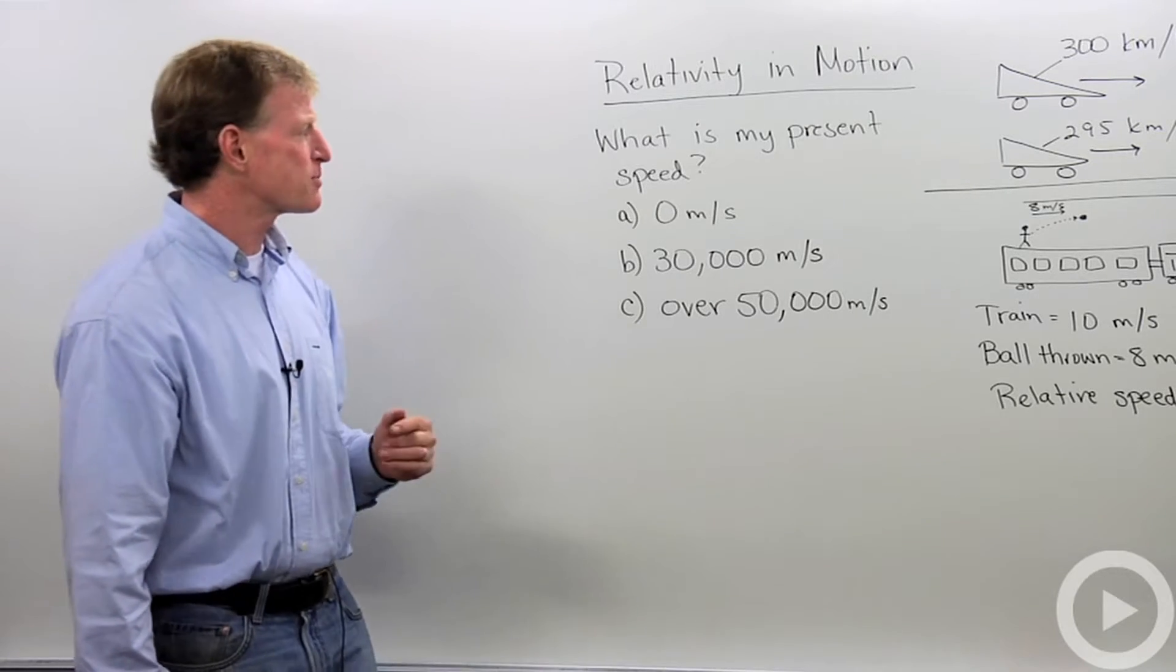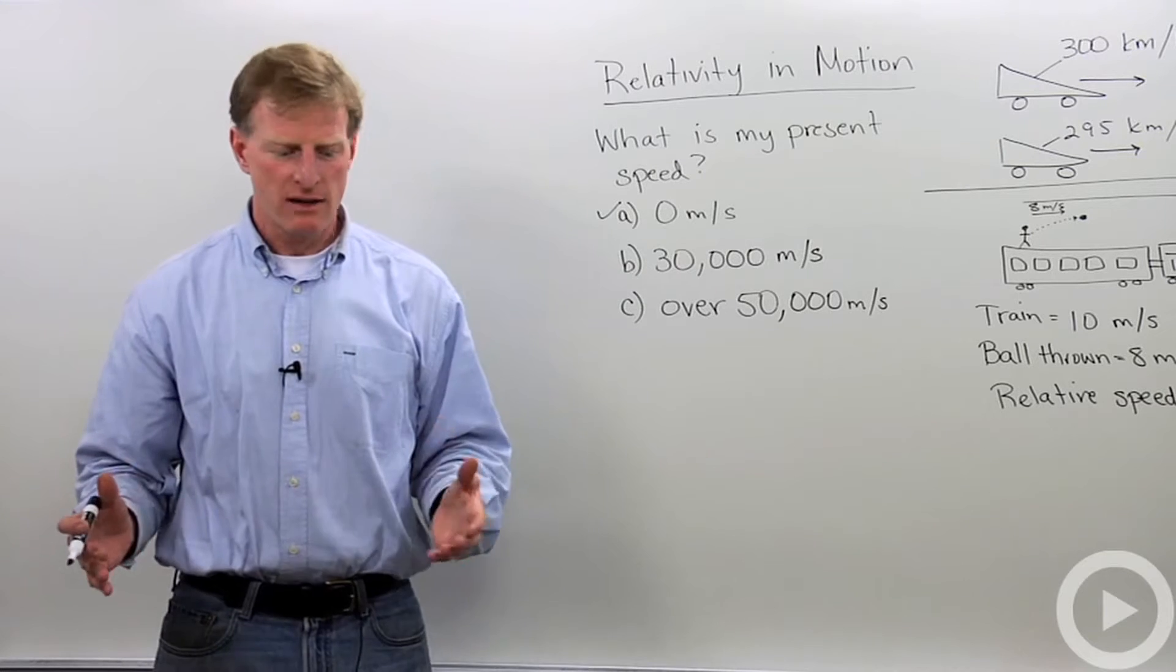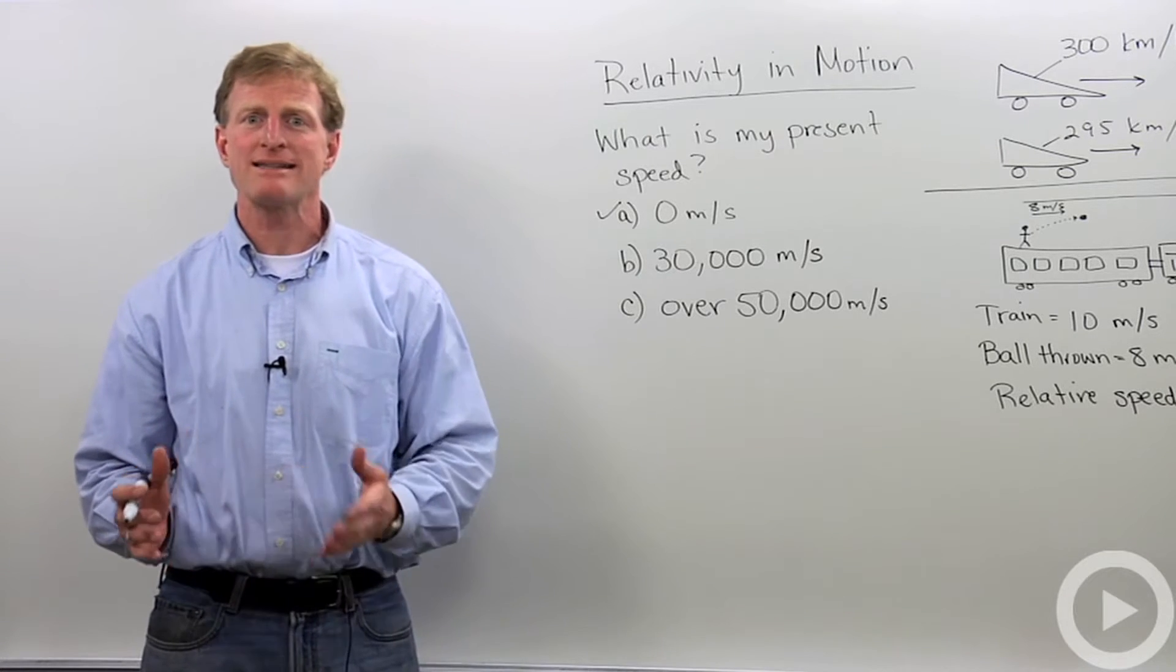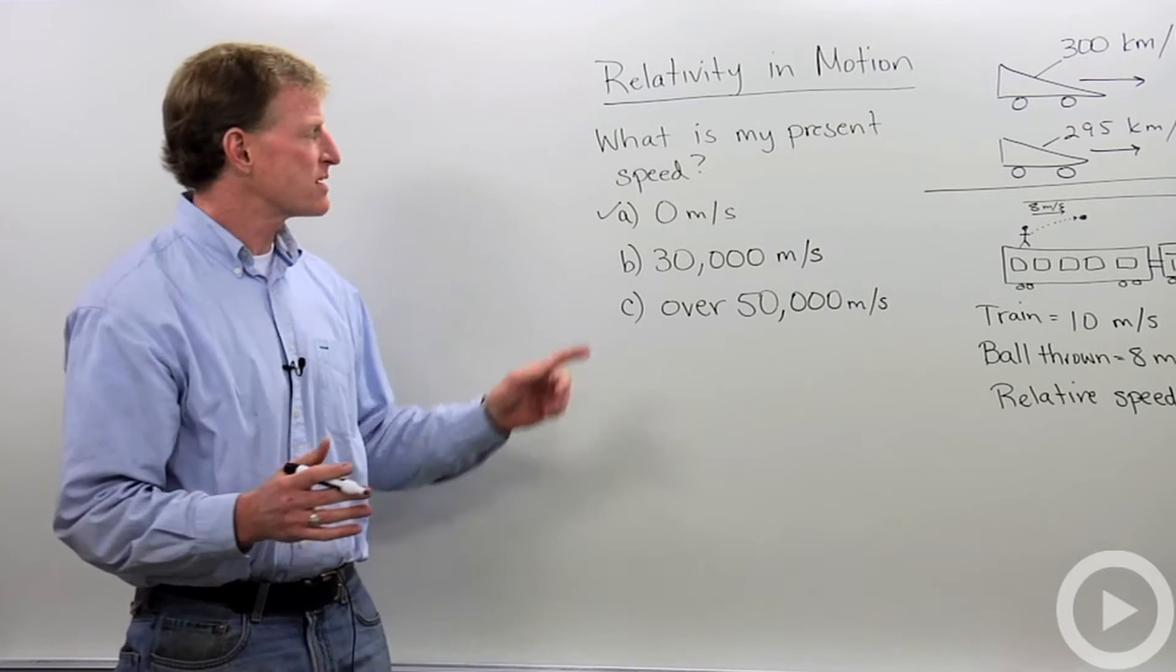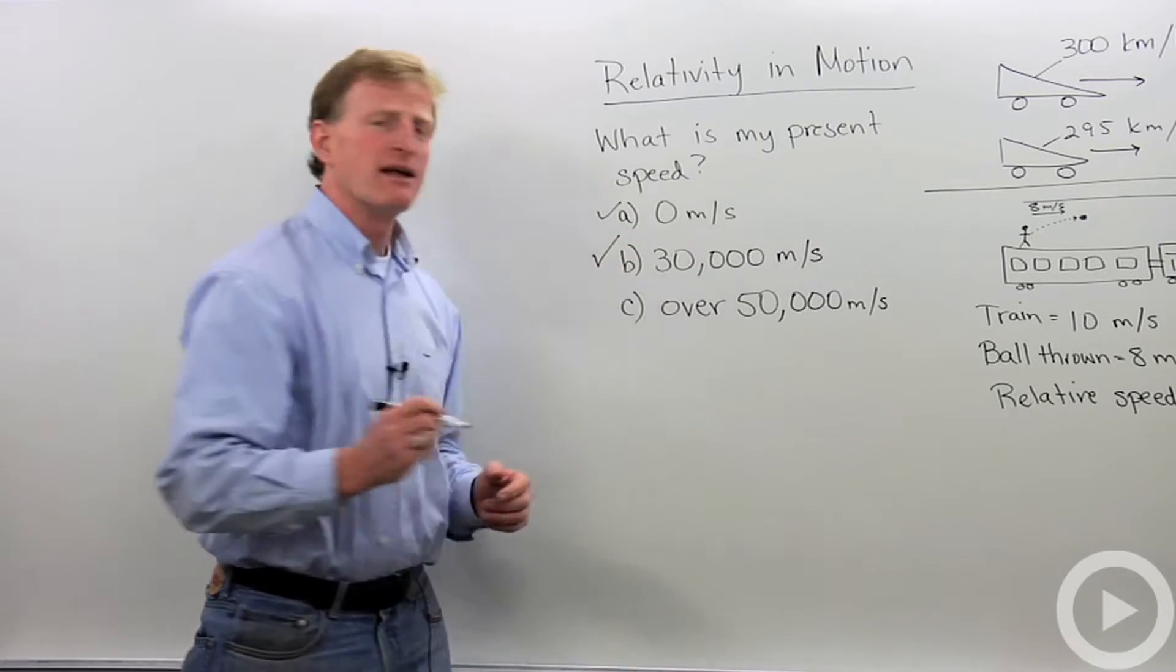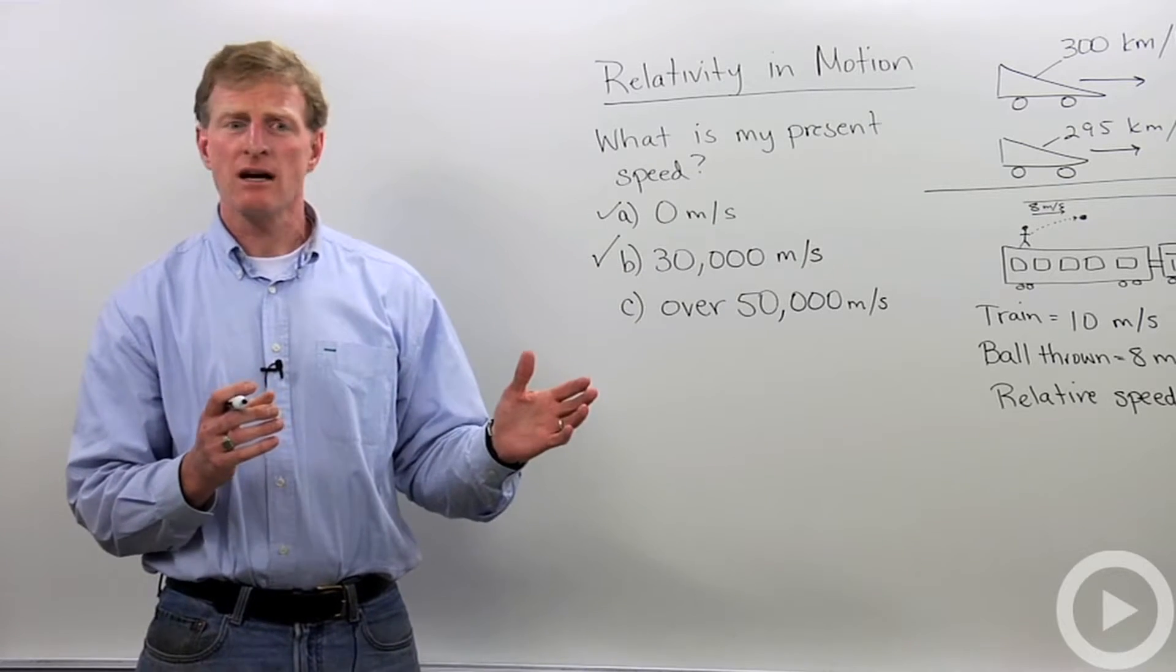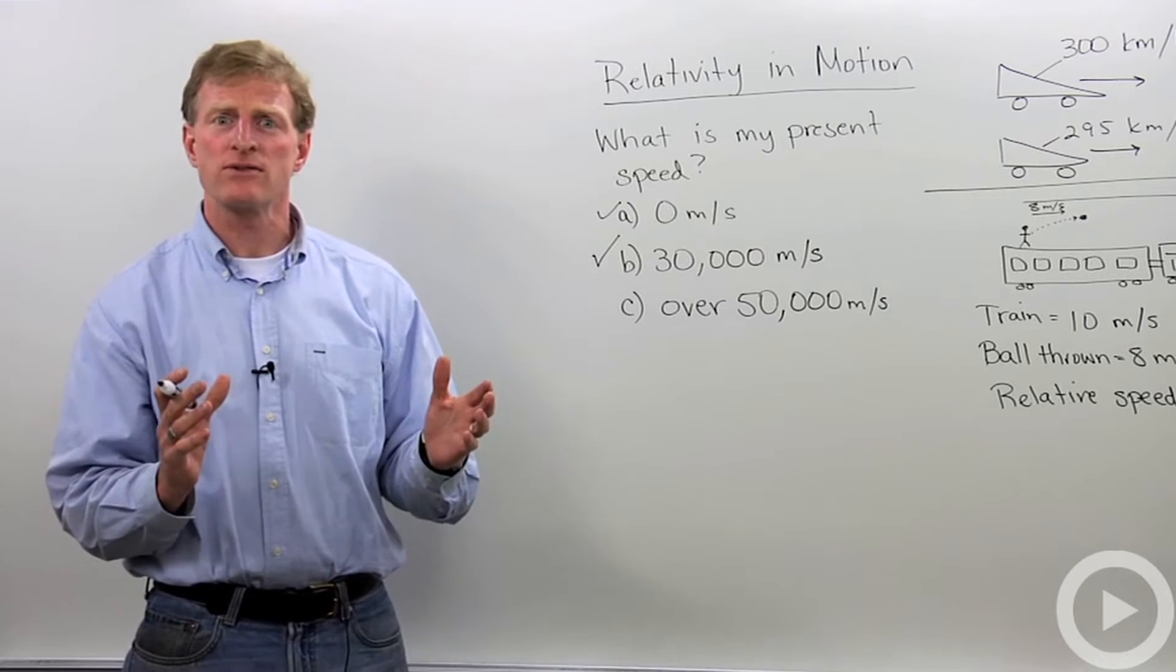Well, if you said 0 meters per second, you're correct. That is my present speed given the relativity to the floor. Where I stand relative to the floor, I'm moving at 0 meters per second. If you said 30,000 meters per second, that is also correct. That is my speed relative to the sun. As we stand on Earth, we are moving at 30,000 meters per second around the sun.